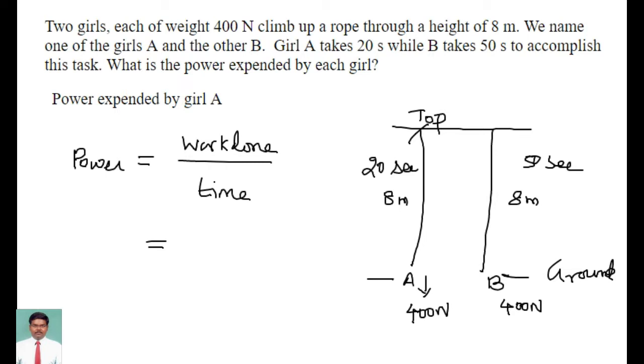That is equal to 400 into 8 divided by 20 seconds for girl A. First we are calculating the power expended by girl A, and that will be equal to 160 watts.